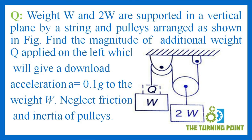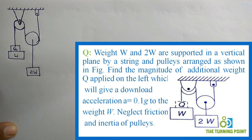Weights W and 2W are supported in a vertical plane by a string and pulley arrangement as shown in the figure. Find the magnitude of additional weight Q applied on the left which will give a downward acceleration A equal to 0.1g to the weight W. Neglect friction and inertia of pulleys.